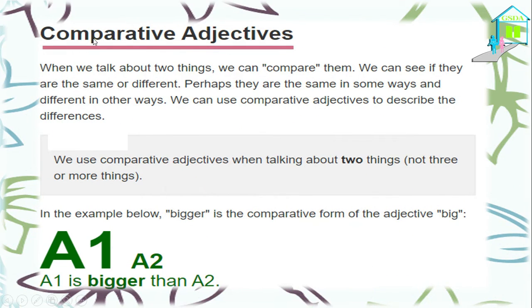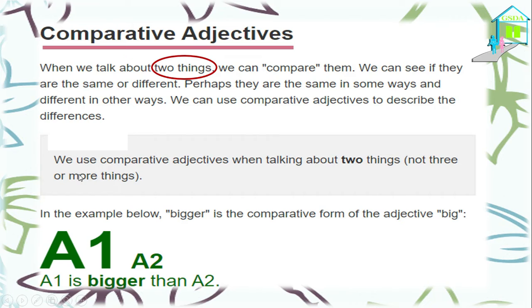The first step is: what are comparative adjectives? We will talk about two things — we can compare them. Comparative adjectives are used to compare two things. We can see if they are the same or different. Perhaps they are the same in some ways and different in other ways. We can use the comparative adjective to describe the differences. So comparative is to compare two things — pay attention, two things. We use comparative adjectives when talking about two things.